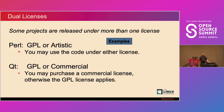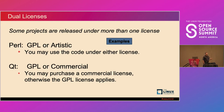Dual licenses: some projects are released under more than one license. For example, Perl is released under the GPL or Artistic license — if you're using Perl source code, you get to choose which license you use it under. Why would projects do this? Some projects want to make it easy for people doing different types of open source projects to take that code and use it, which can also help solve license conflict problems.